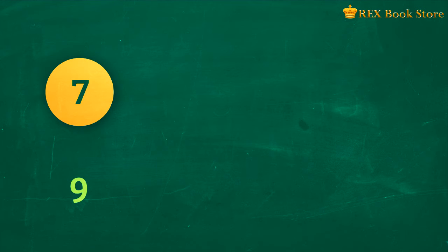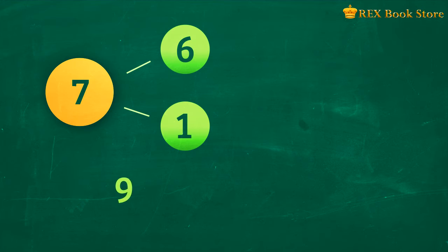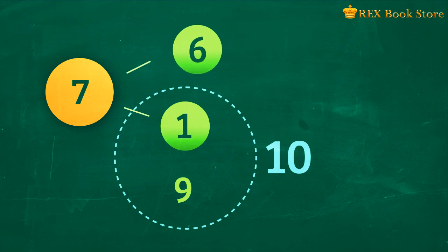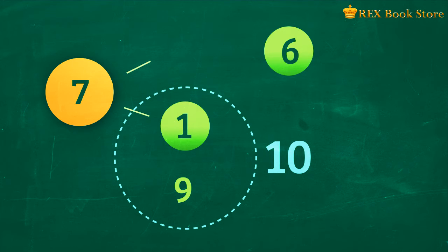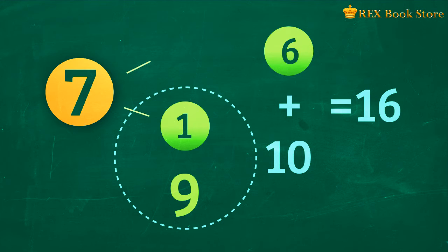How will it look like as a number bond? 7 can be represented by two parts, 1 and 6. 9 and 1 make 10, and we'll have 6 as the remaining number. 9 plus 7 is equal to 10 plus 6, which is 16.